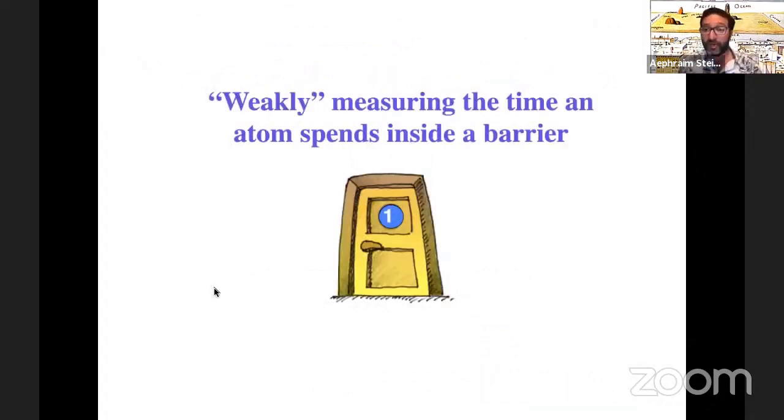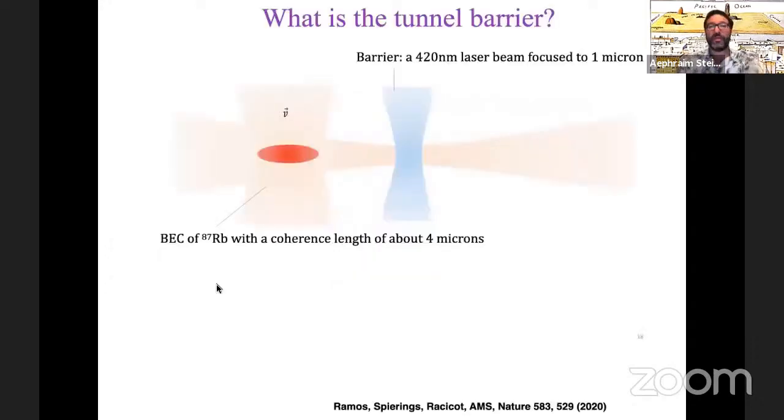So this was the idea of our experiment. By using this Larmor clock, this stopwatch, we're going to try to weakly measure the time an atom spends in the barrier. I'll come back to the word weakly later on. So what is the actual experiment? I've been talking generalities until now. Now let's get into the nuts and bolts or the atoms and the lasers.